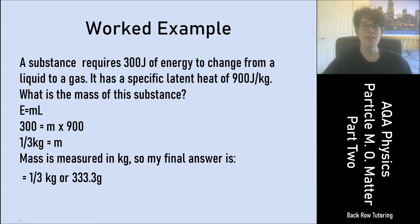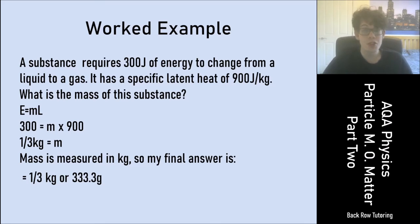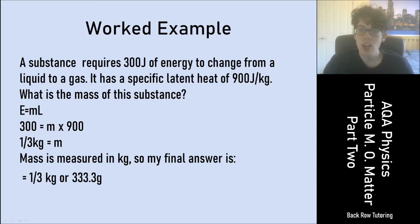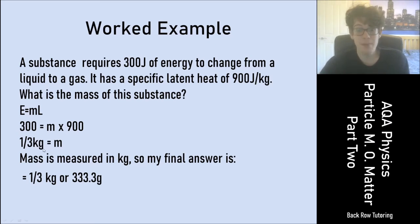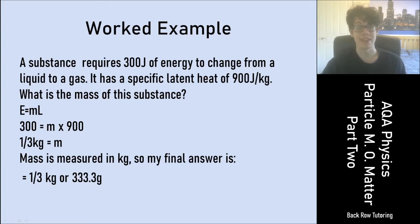Worked example: a substance requires 300 joules of energy to change from a liquid to a gas, and has a specific latent heat of 900 joules per kilogram. What is the mass? Write out E = mL: 300 = m × 900. Rearranging, divide both sides by 900. Mass equals one third of a kilogram. The final answer is 0.33 kilograms, or 333.3 grams.